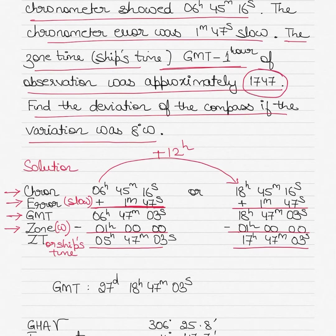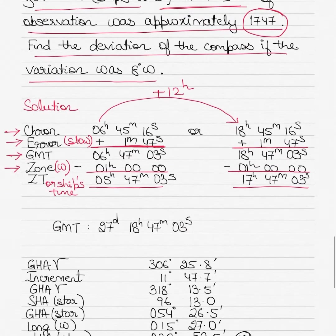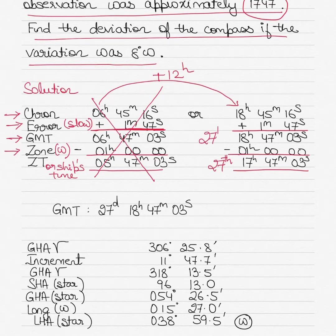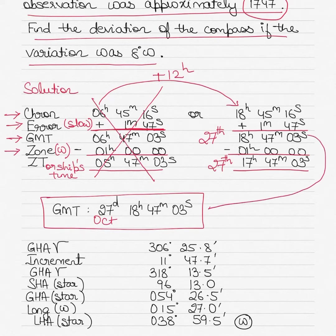Look at the hint in the question: ship's time is 17:47 on 27th October. So the first case (05:47) is not correct. The date is 27th October and the time is 17h 47m 03s on the ship. Therefore, since we are only 1 hour behind GMT, the GMT is also 27th October at 18h 47m 03s.